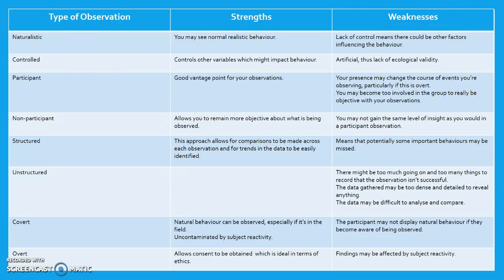So I'm going to go through the strengths and weaknesses of each type of observation. First of all, naturalistic observations. The strengths of this are that you may see normal realistic behaviour. The weaknesses are that lack of control means there could be other factors influencing the behaviour. For controlled observations, the strengths are that it controls other variables which might impact behaviour, and the weaknesses are that it is artificial and therefore lacks ecological validity.